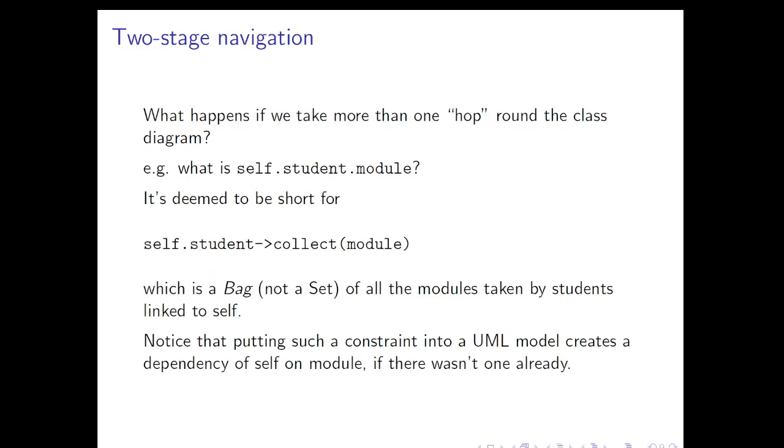We've already seen a little bit about when we take more than one hop around the class diagram. So suppose we go self.student.module. Self, in this case, let's say, is Advisor. So I'm an advisor, I'm going to look at the set of all the students that I advise, and then each of those students is taking, let's say, a number of modules. So what's going to happen if I go self.student.module? It's deemed to be short for self.student->collect(module), and in other words, what this amounts to is a bag of all the modules taken by the students who are linked to self. So we already covered that self.student is a collection of students, but now self.student.module is a bag. Why is it a bag? Because we might have several students who are taking the same course, and it just so happens in OCL that that information about the multiplicity of the elements is retained. If you don't want that, then you'll use the asSet operation to bring it back to a set.